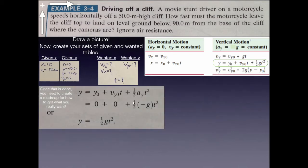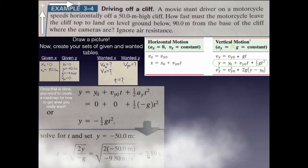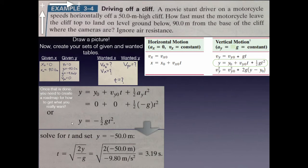Looking at the vertical equations, the second one has the information I need. The first equation lacks vyf, and the third (time-independent) doesn't contain t. So I use equation two. Plugging in y₀ = 0 and vy₀ = 0, it simplifies to: yf = ½g·t². With g = −9.8 and yf = −50 m, the negatives cancel. Solving for t: t = √(2·50/9.8) ≈ 3.19 seconds.